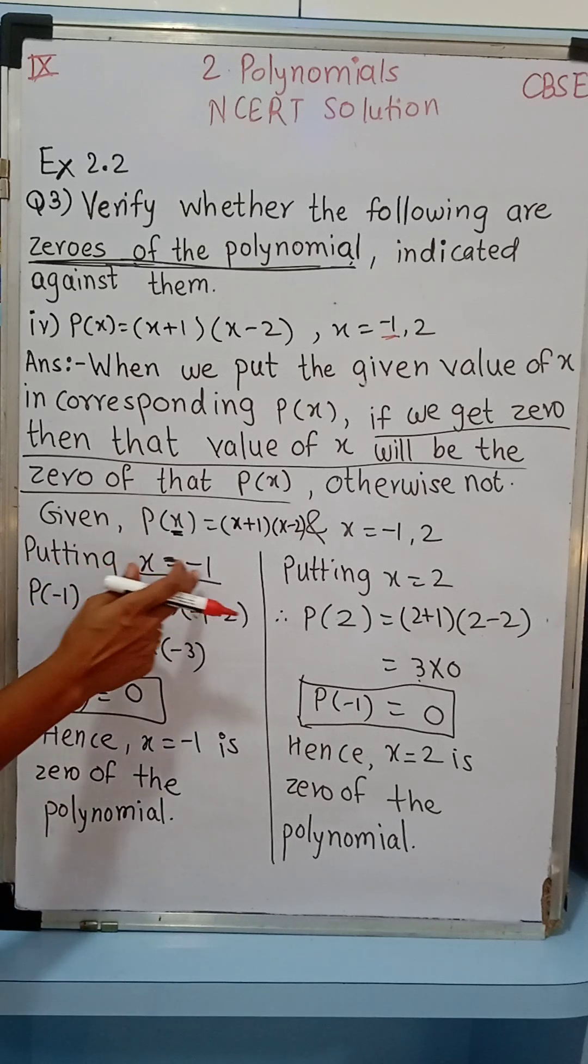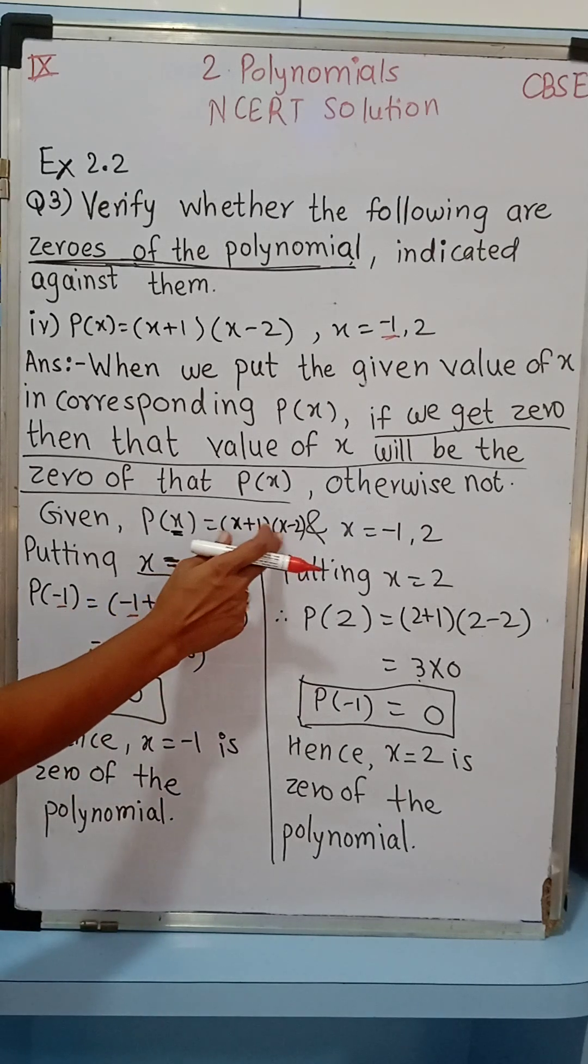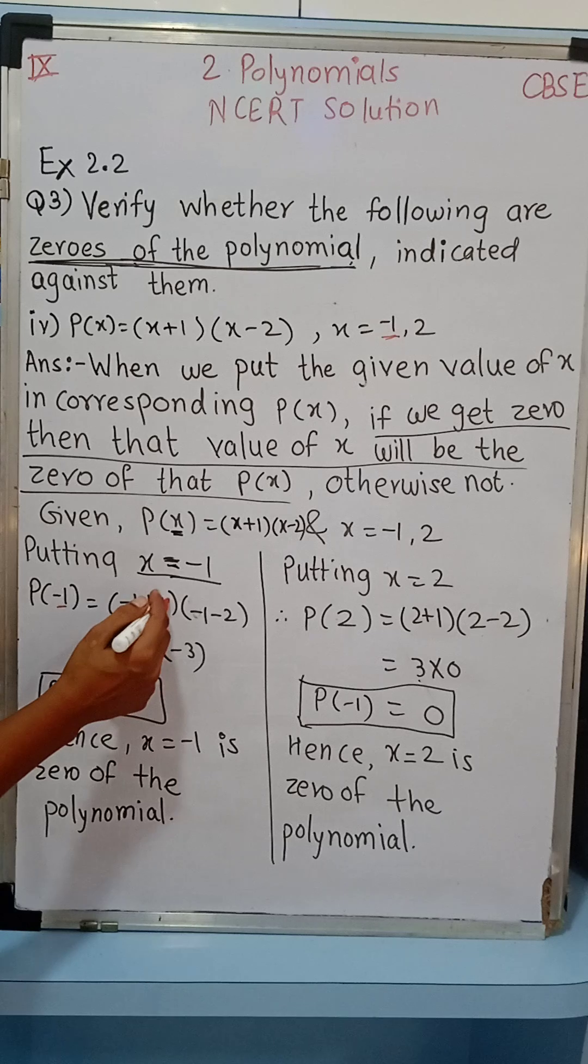Putting x = -1. Here, wherever it is x, just put instead of x equal to minus 1, so this is (-1+1)(-1-2). Minus 1 plus 1 will get cancelled, so remaining is 0.